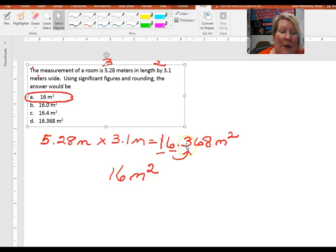If this number had been a 5 or a 6 or a 7, this would have gone up and your answer would have been 17 meters squared.